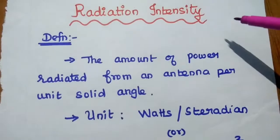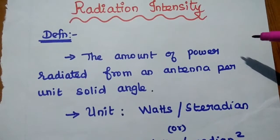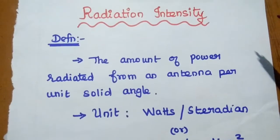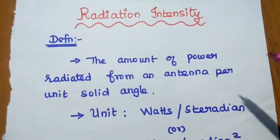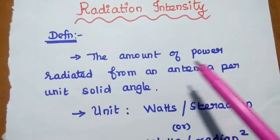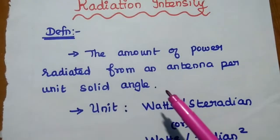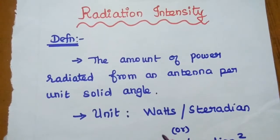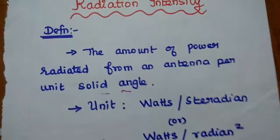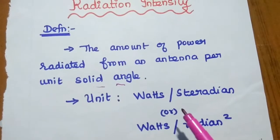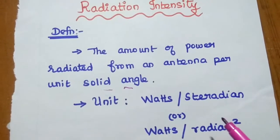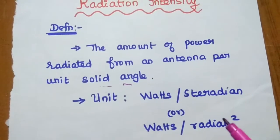Radiation intensity is defined as the amount of power radiated from an antenna per unit solid angle. This intensity is closely related to the density of the antenna. In density, we mentioned power radiated per unit surface area, but for intensity, it is power radiated per unit solid angle, because we analyze antenna characteristics in space using spherical coordinates. The unit of radiation intensity is watts per steridian.